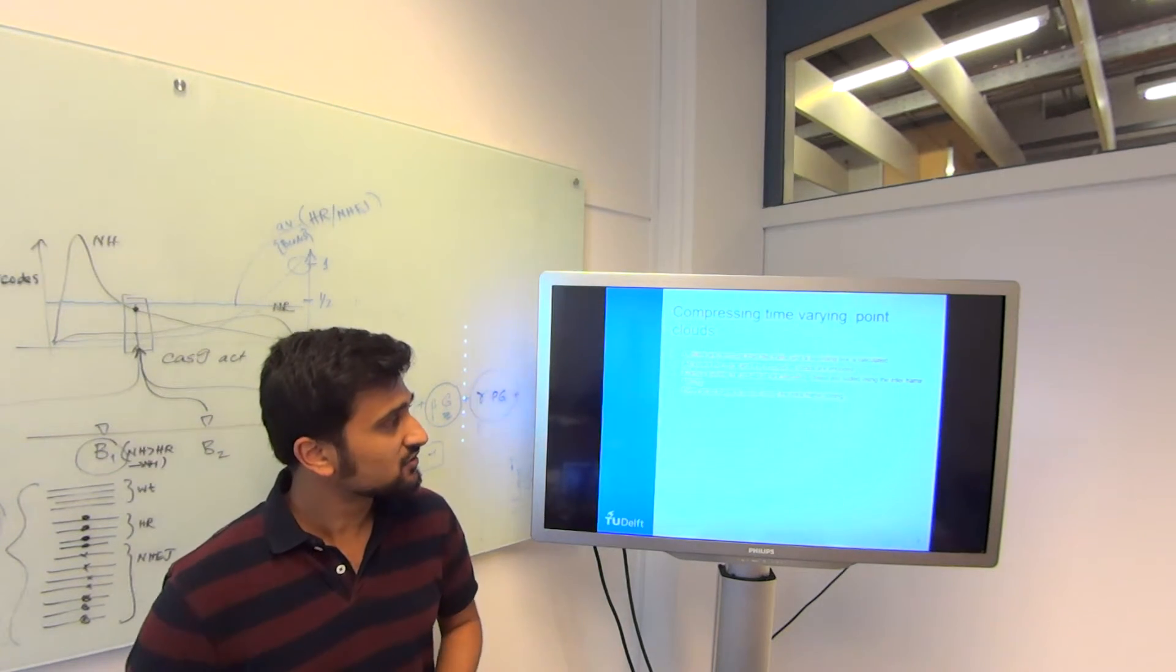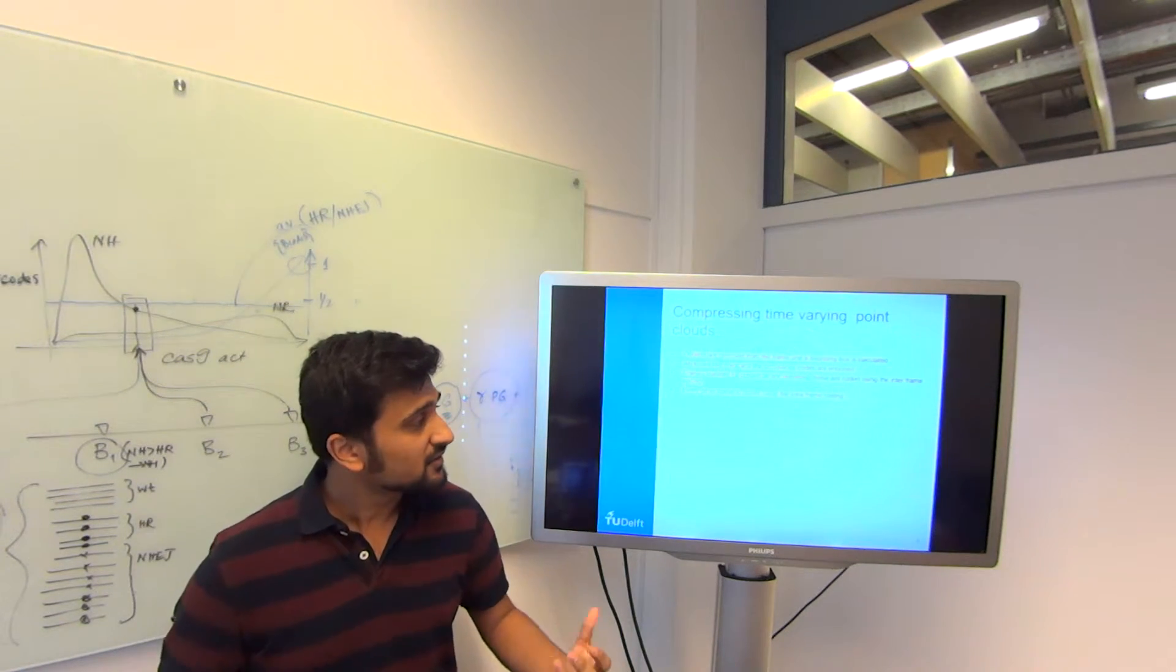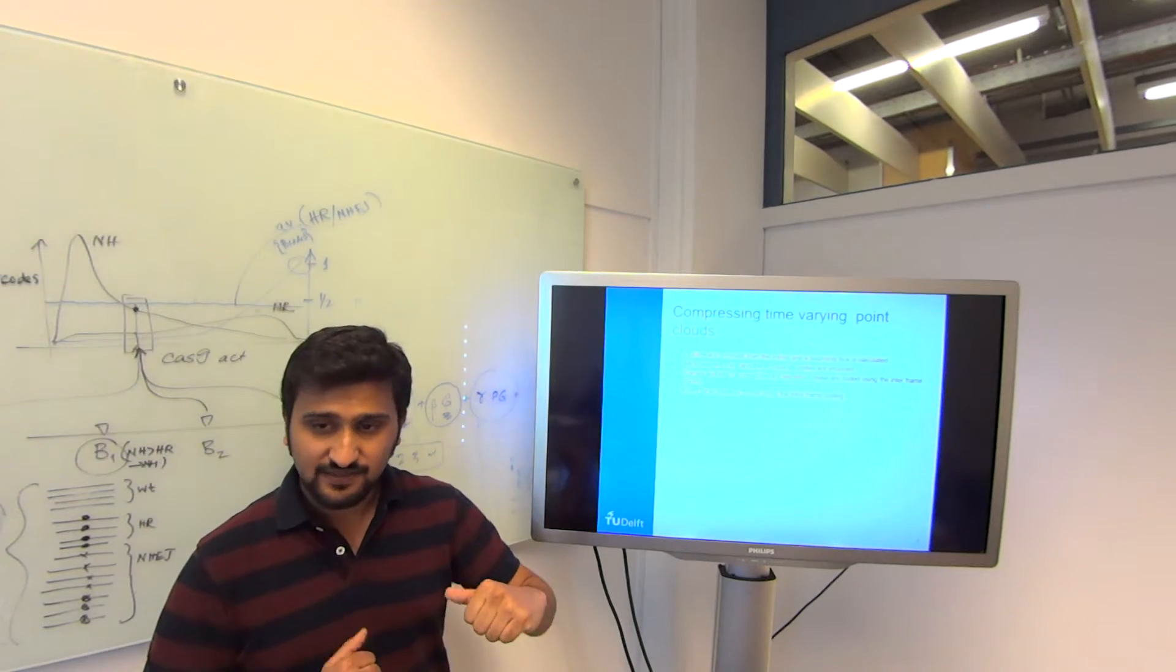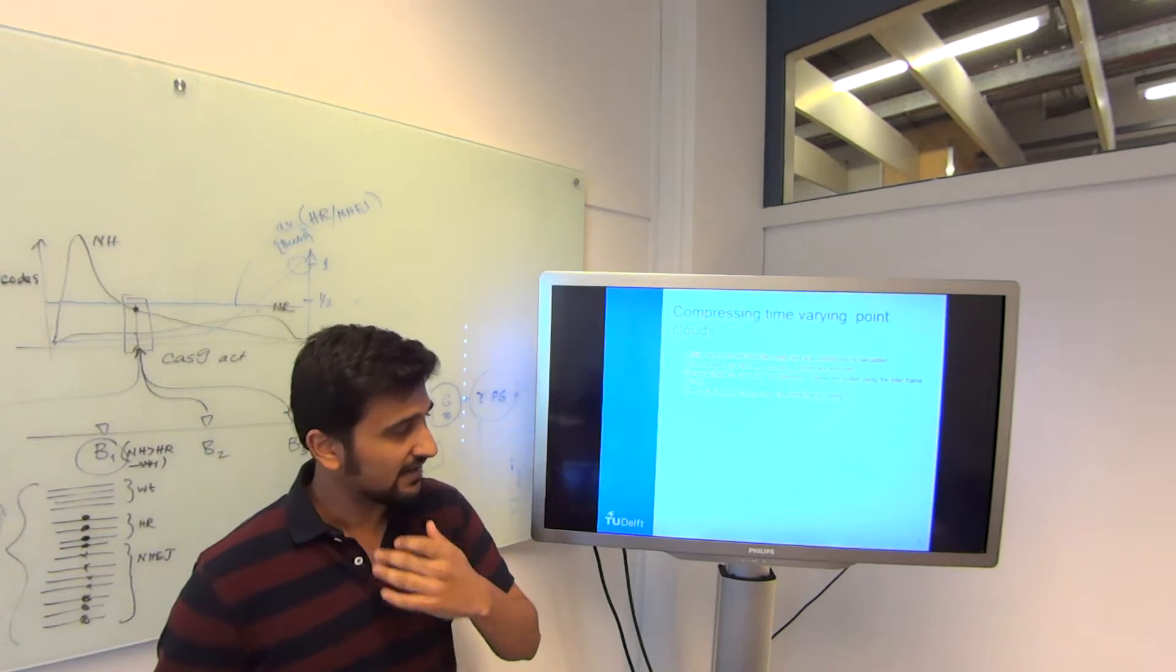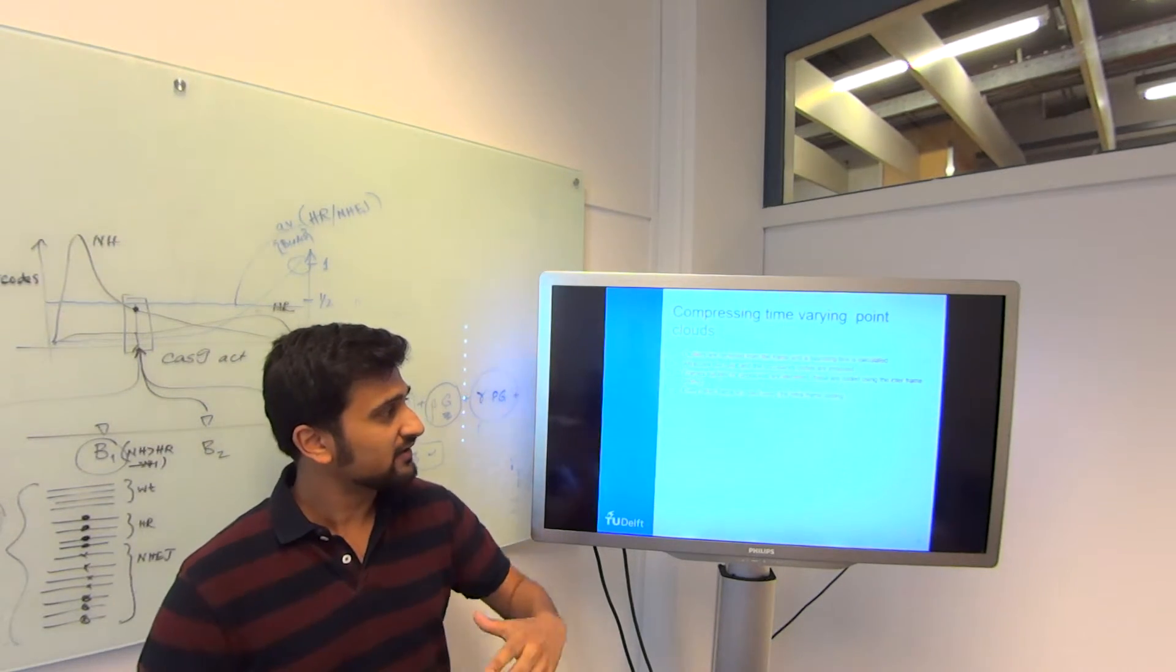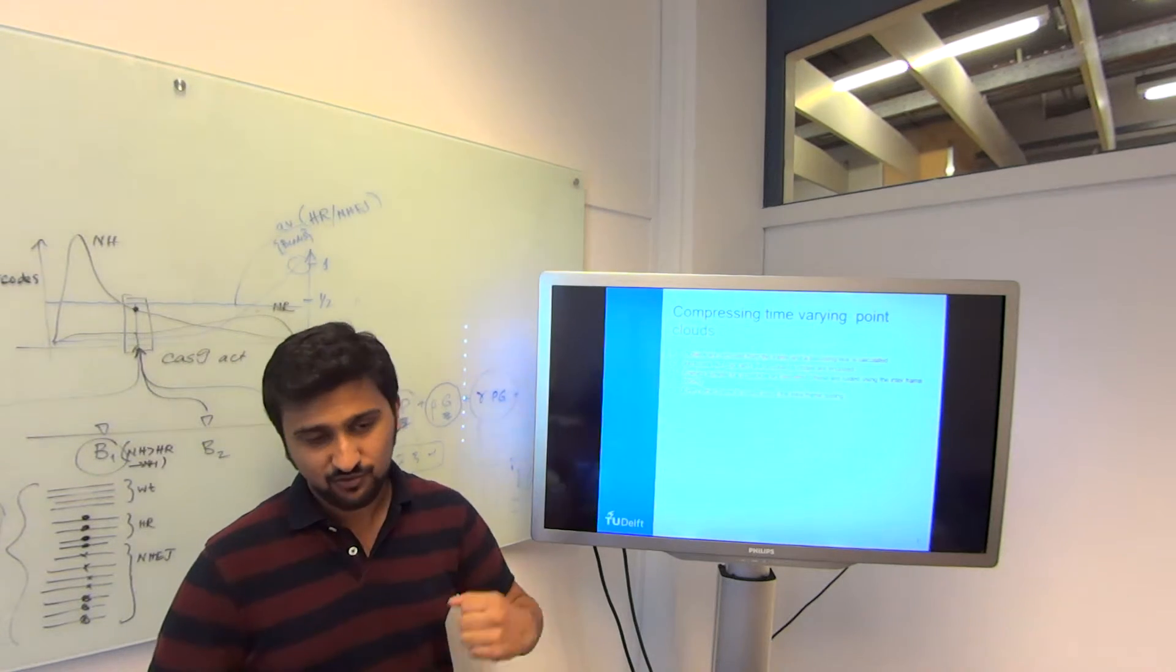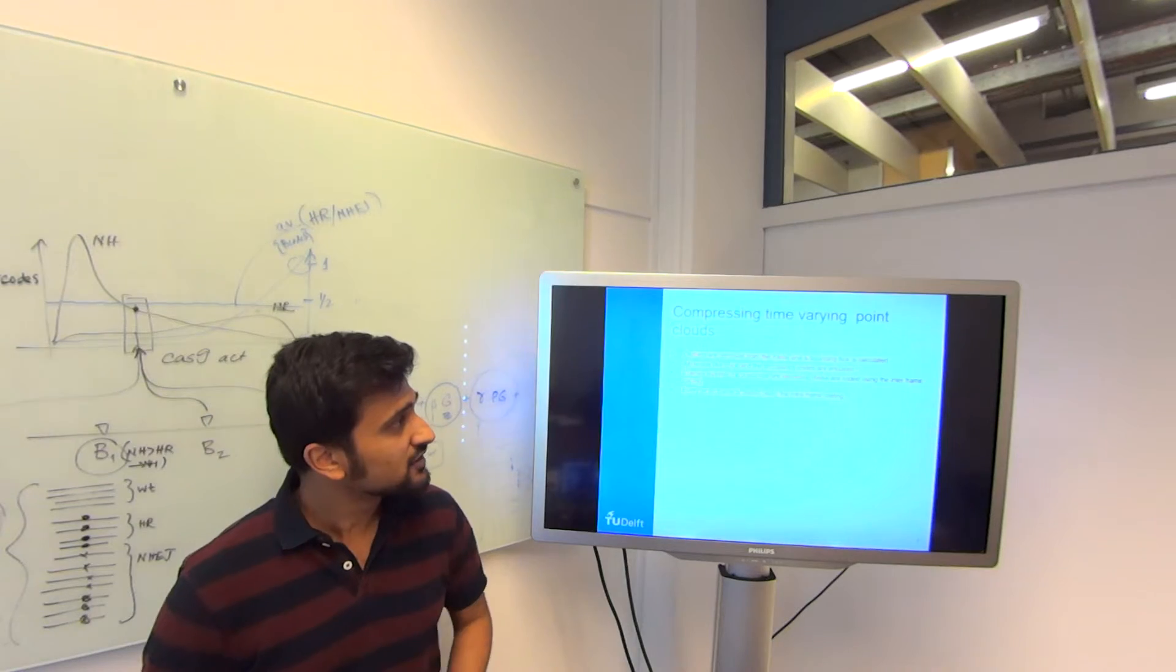Another solution that they showed was where the compression was done by dividing into macro blocks and they code a rigid transform. They use something called an iterative closest point algorithm where you find a rigid transform that will take you from one macro block to the next in the next frame. These are two of the approaches that they used.